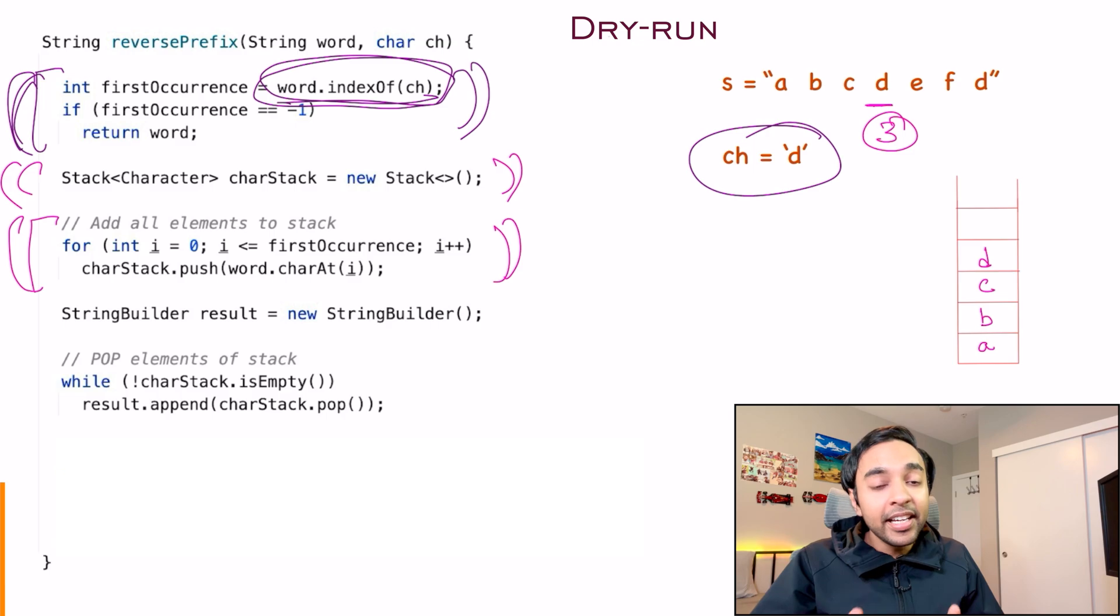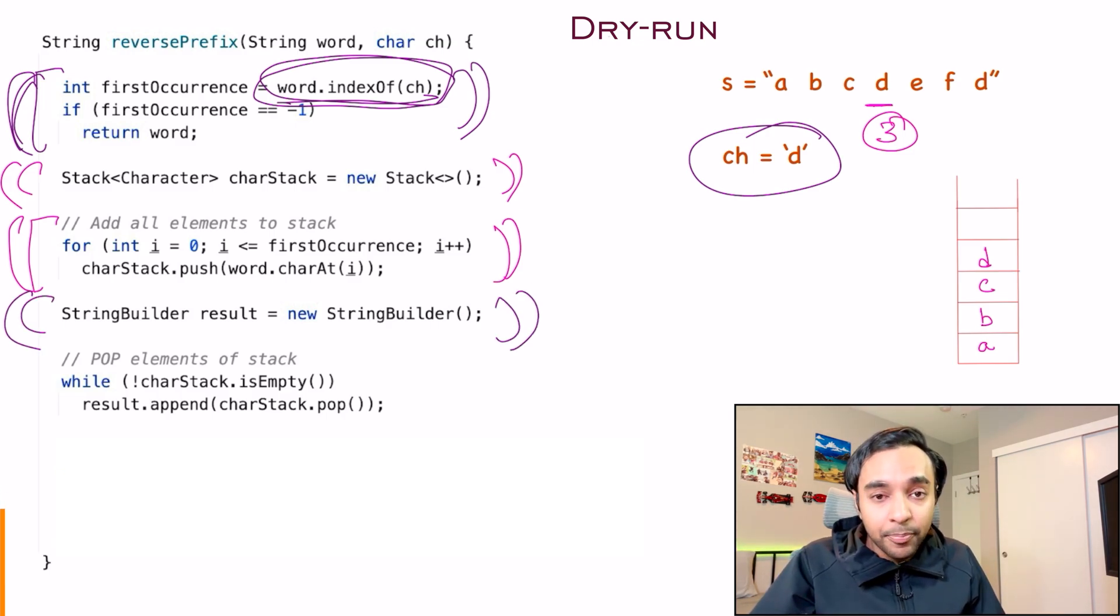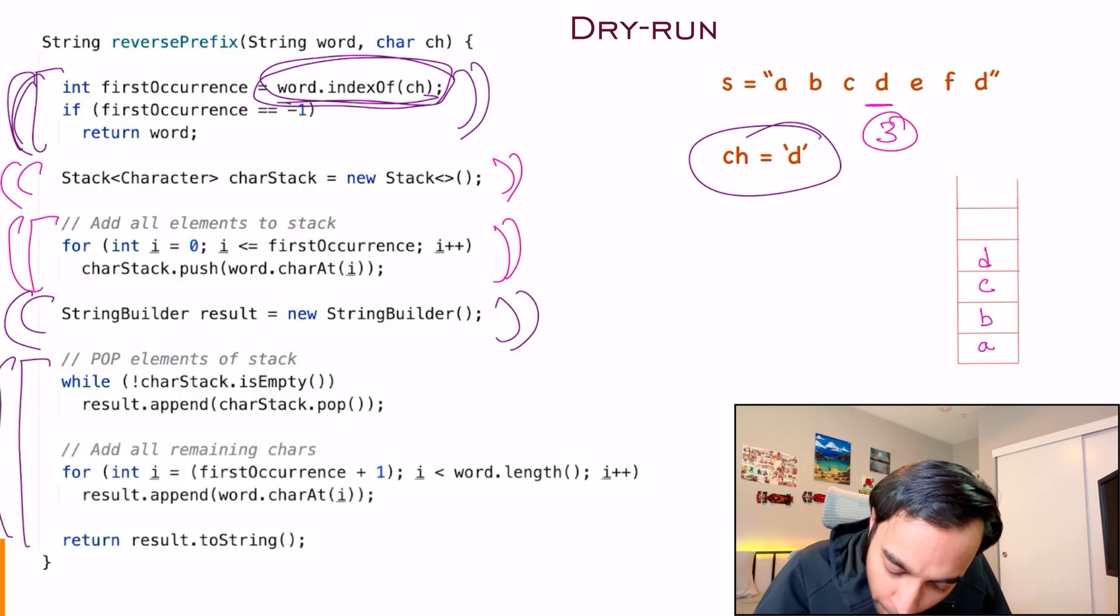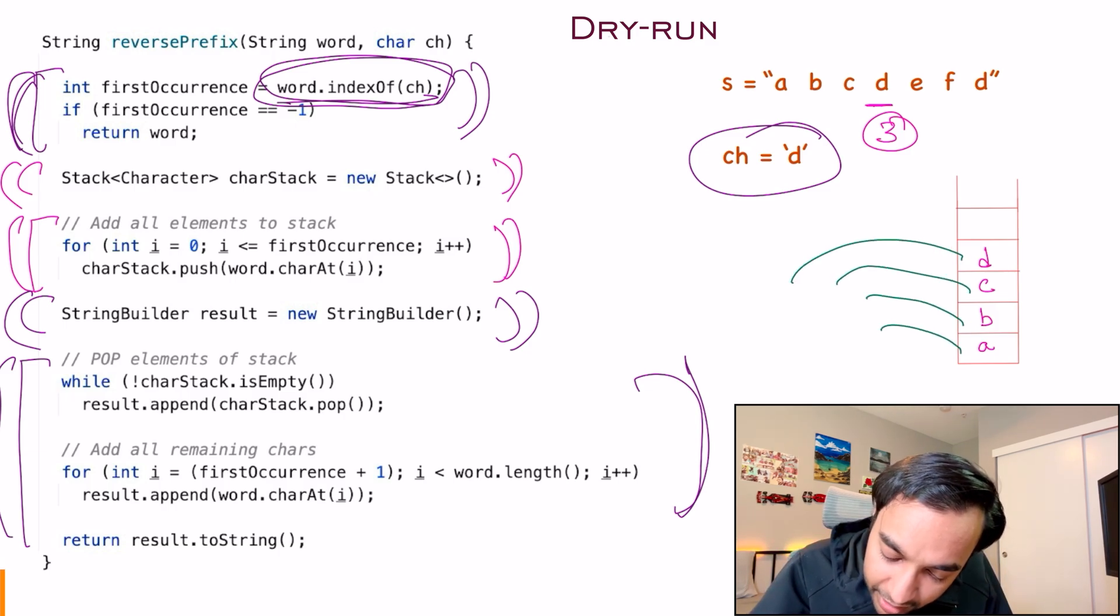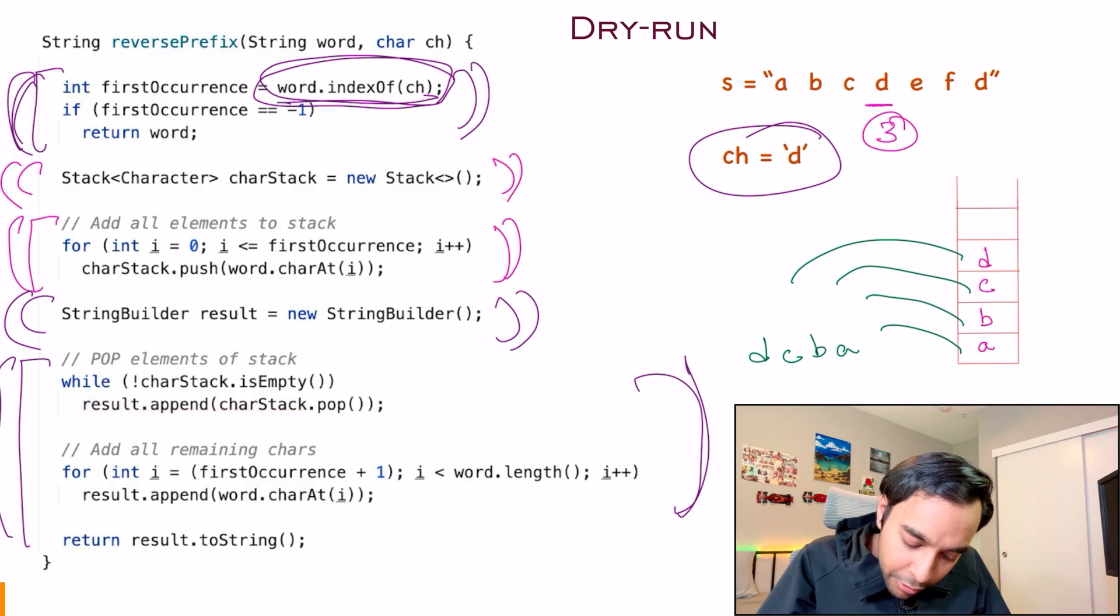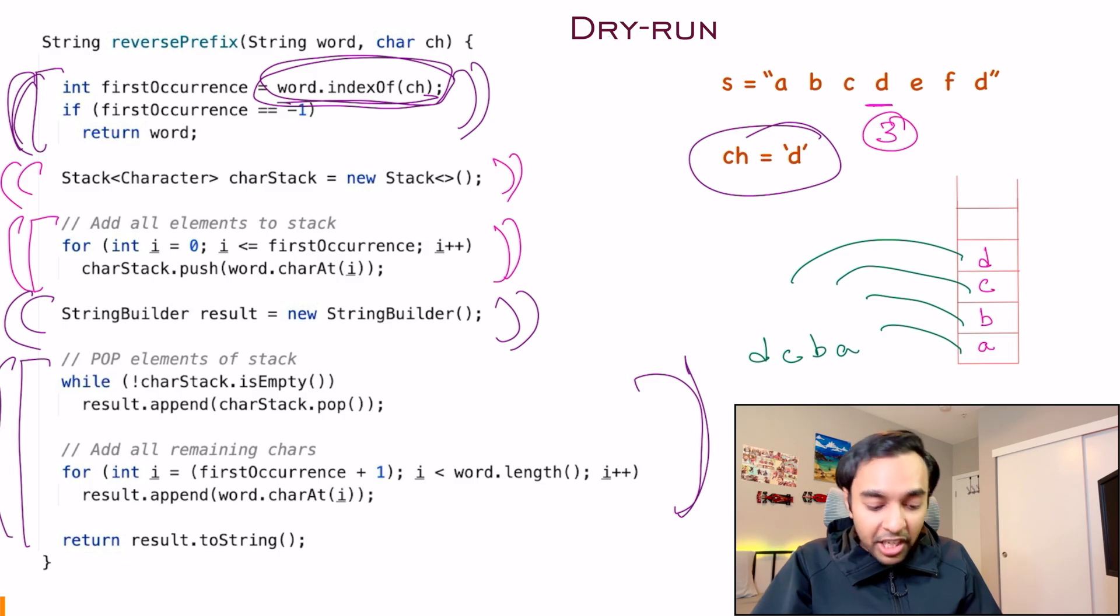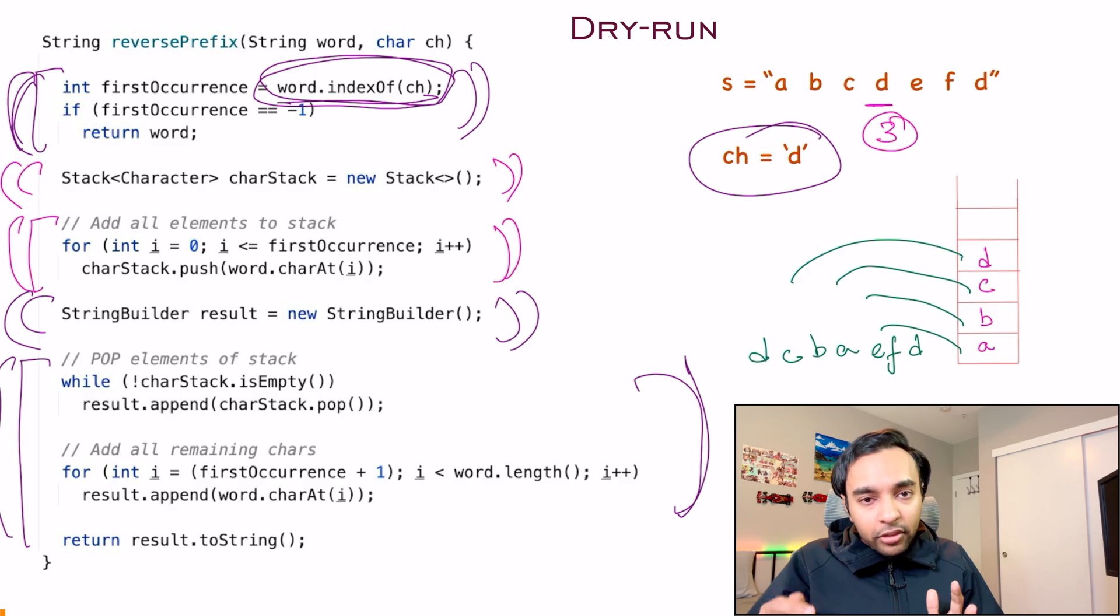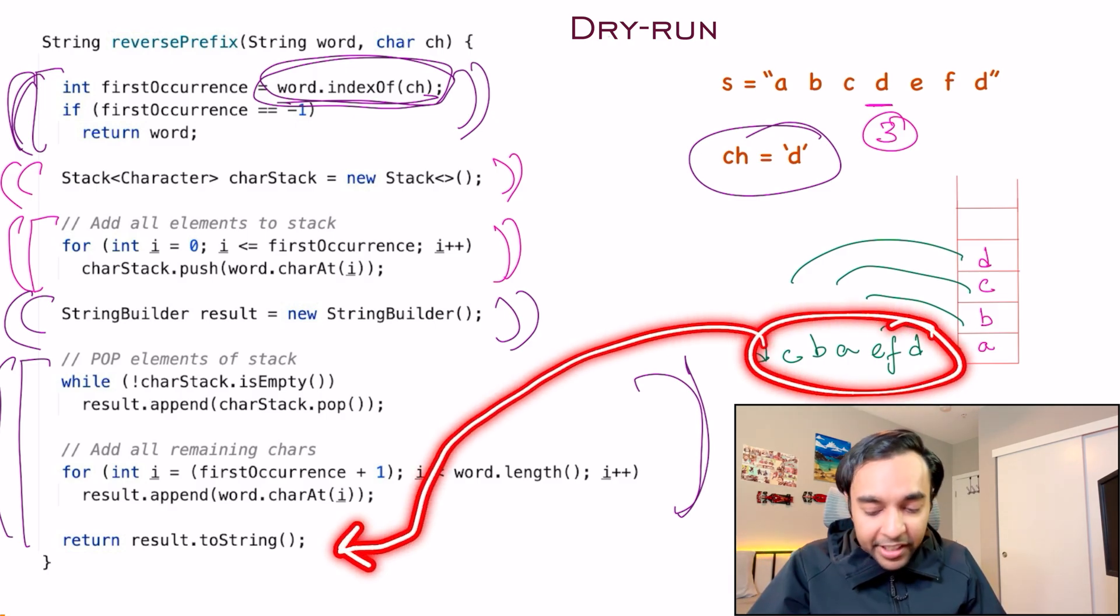So, for the result, once again, what do you do? You will keep on popping elements from the stack and that will give you D, C, B, and then an A. Once you have popped out all of the characters, you just need to add all the remaining characters that were present in your string. So, this is going to add E, F, and D. After all of this is finished, this is your resultant string and this is then finally returned. I hope I was able to simplify the problem and its solution for you.